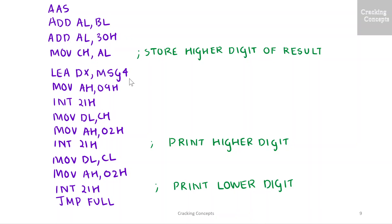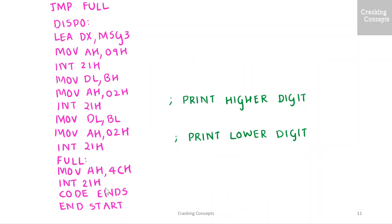Then I'll display the message to be shown when the difference is negative, which is message 4, using function code 09H — that is CH followed by CL. Then I perform a jump to the label 'full' which will exit from the program.